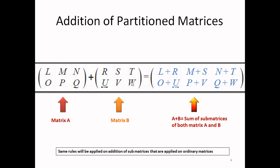Partitioning of matrix B resulted in six sub-matrices R, S, T, U, V, W. Now remember that the same rules for addition of matrices will be applied here. We add component by component: L with R, M with S, N with T, and likewise for the rows below. The rule is that the two matrices being added must be of the same size.